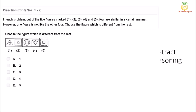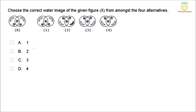Next question type: out of 5 figures, 4 are similar in a certain manner but one is different — choose the odd one out. What I can see is that in every diagram one shape is dotted: triangle is dotted here, again triangle is dotted, square is dotted here, square is dotted here — but in the fourth figure nothing is dotted. So the fourth one is different from the rest.